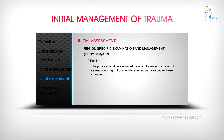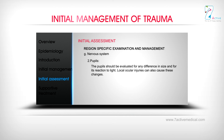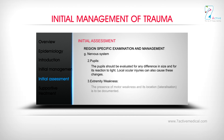Second, pupils: the pupils should be evaluated for any difference in size and for reaction to light. Local ocular injuries can also cause these changes. Third, extremity weakness: the presence of motor weakness and its location — lateralization — is to be documented.